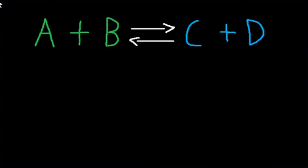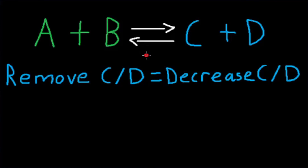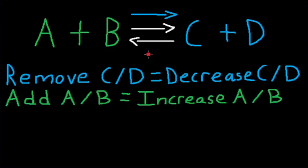Look at this reaction. If we remove C or D, or decrease C or D, the reaction will shift right to replace what is being removed. An easy way to remember this is: point at what is being removed. If we add or increase A or B, the reaction will also shift right to consume what is being added. Another easy way to remember this is: don't point at what is being added.